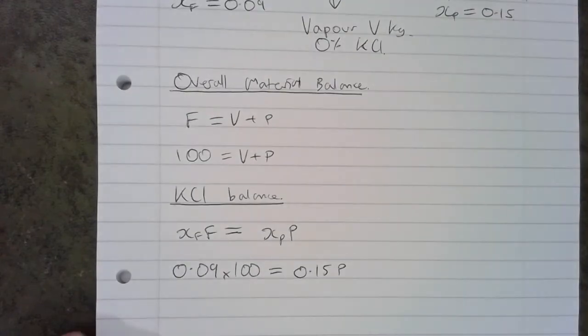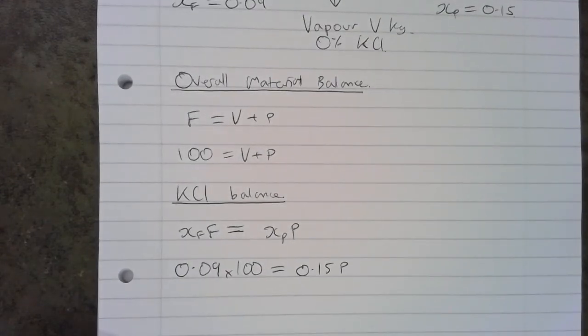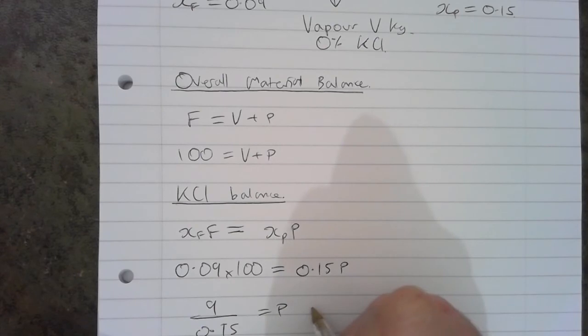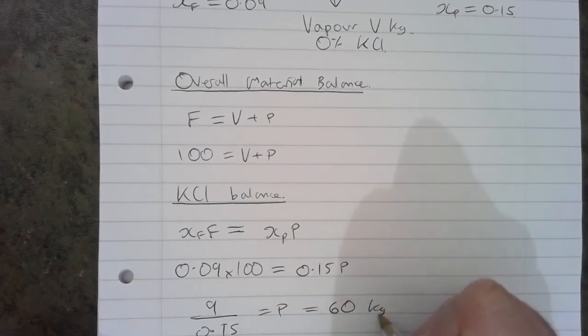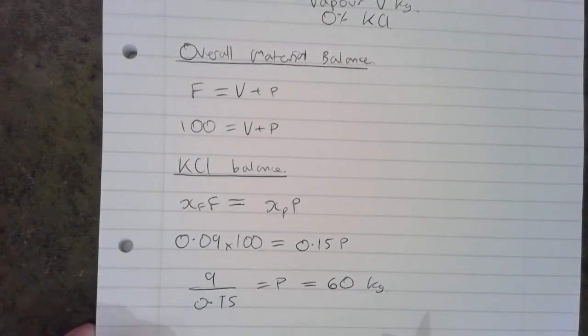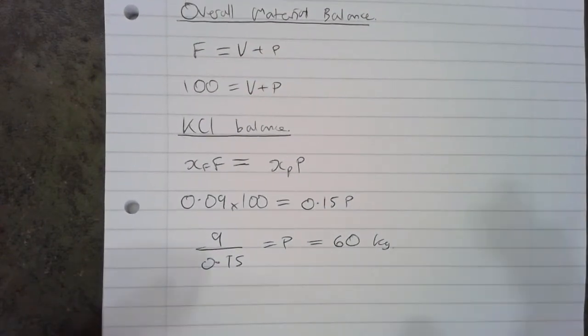And we've only got one unknown there, so we can rearrange and solve for that. So 0.09 times 100 is 9 divided by 0.15, which in this case is going to equal 60 kilograms. The question asked us to work out the mass of water that had to be evaporated, which is actually V.